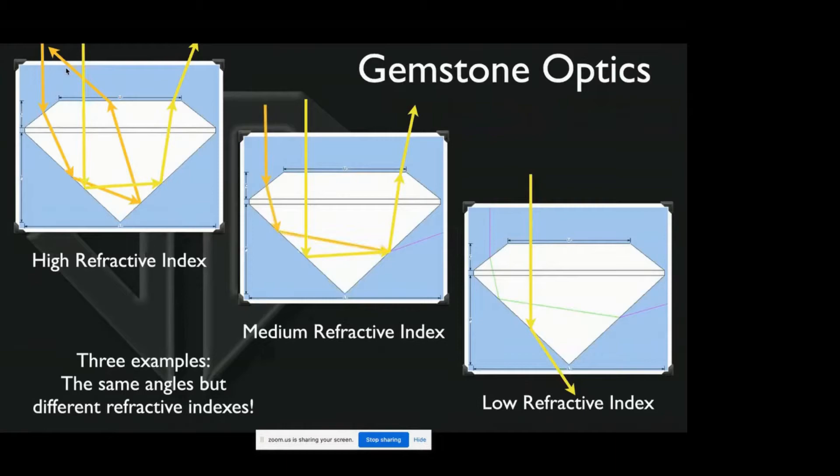In a medium refractive index it is not refracted or bent quite as much, and so because it wasn't bent quite as much here, it changed the angle of incidence here and it did not have enough reflectivity and enough angle to bounce back out here, so it's lost out the side.